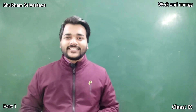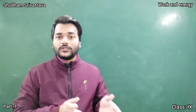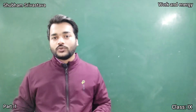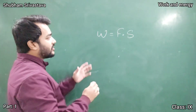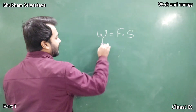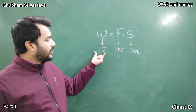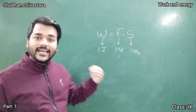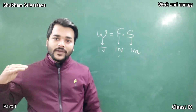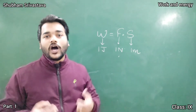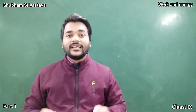Let us understand the very first question of this chapter: define one joule of work. We just understood that the unit of work is joule. Using the formula W = F × s, substitute all units as one: one joule of work, one newton of force, one meter of displacement. Therefore, one joule of work is said to be done when a force of one newton causes a displacement of one meter.